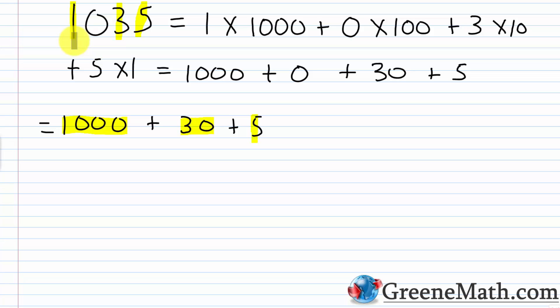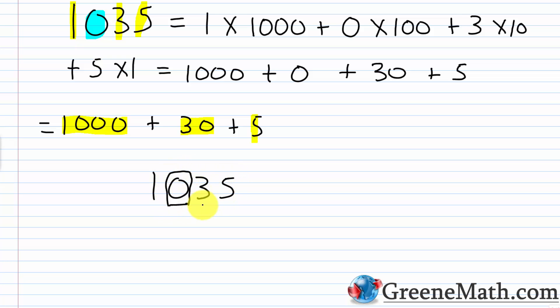It's a pretty simple concept overall. Remember, when we talk about this 0, it's a placeholder — we don't have any hundreds in this case. But our number system allows us to write 1,035 with this 0 saying it doesn't have anything there but holds that space. Otherwise, this 1 would collapse down and you wouldn't be able to tell the difference between 135 and 1,035, which causes all kinds of problems.